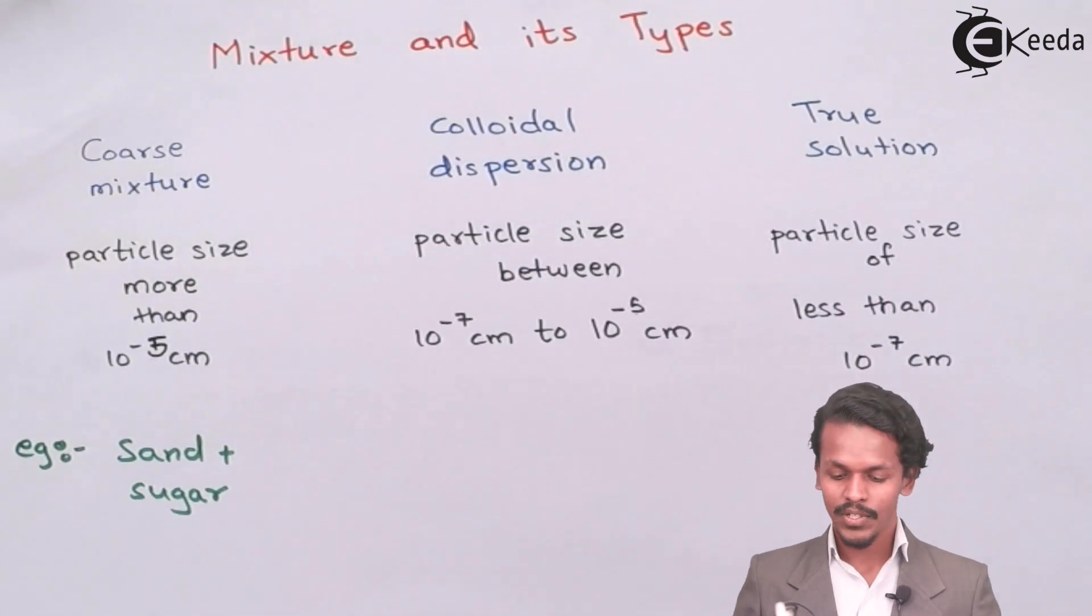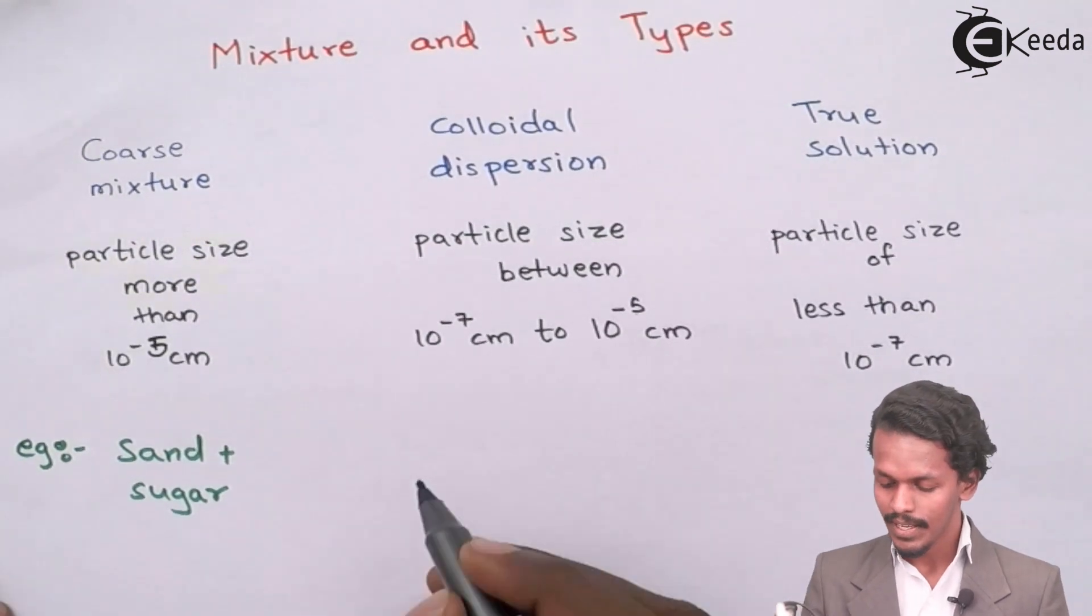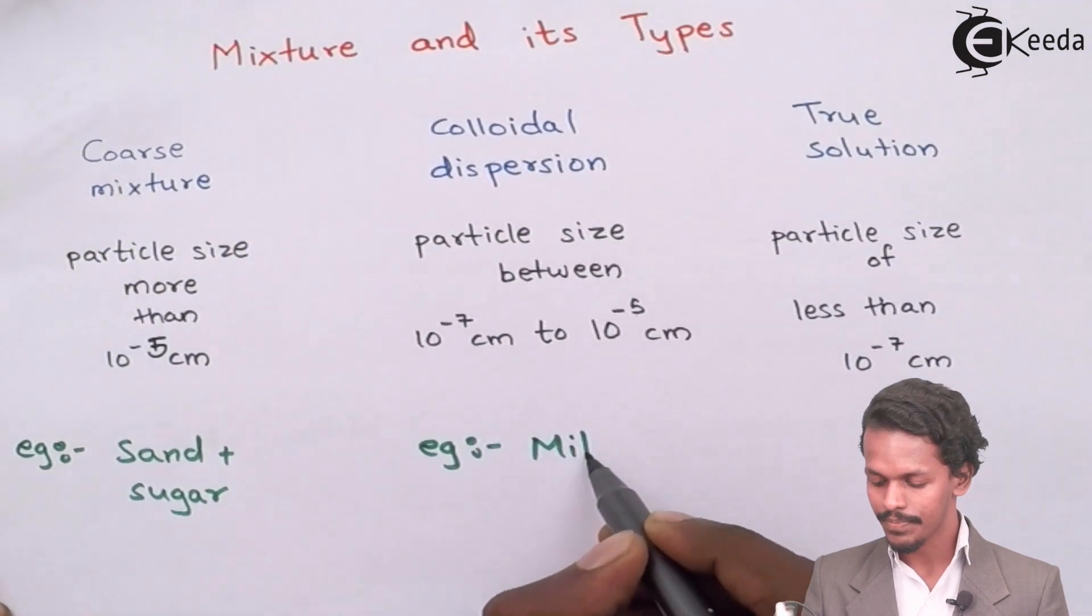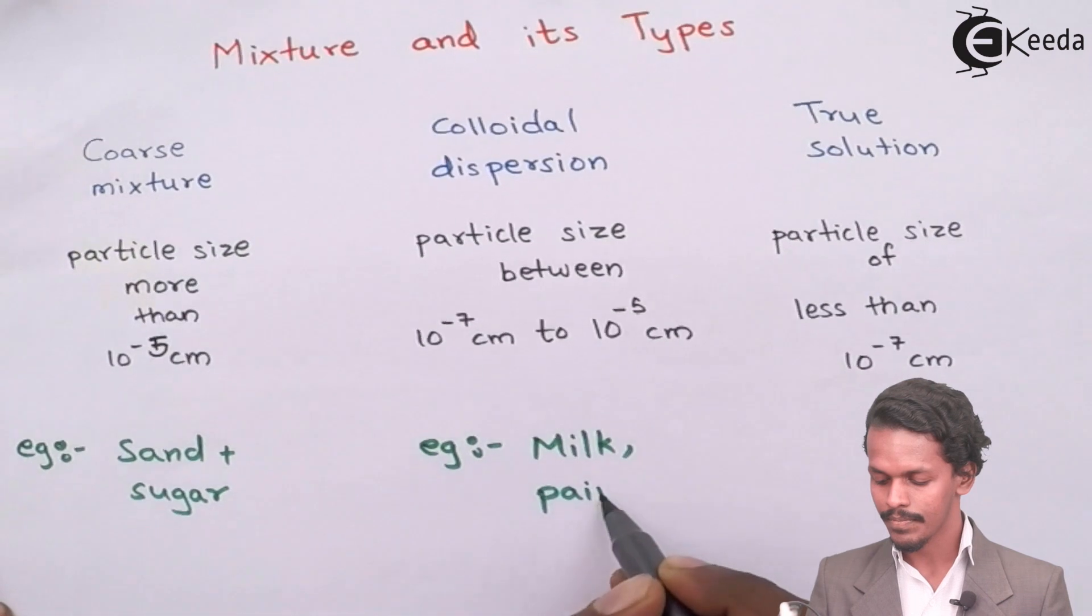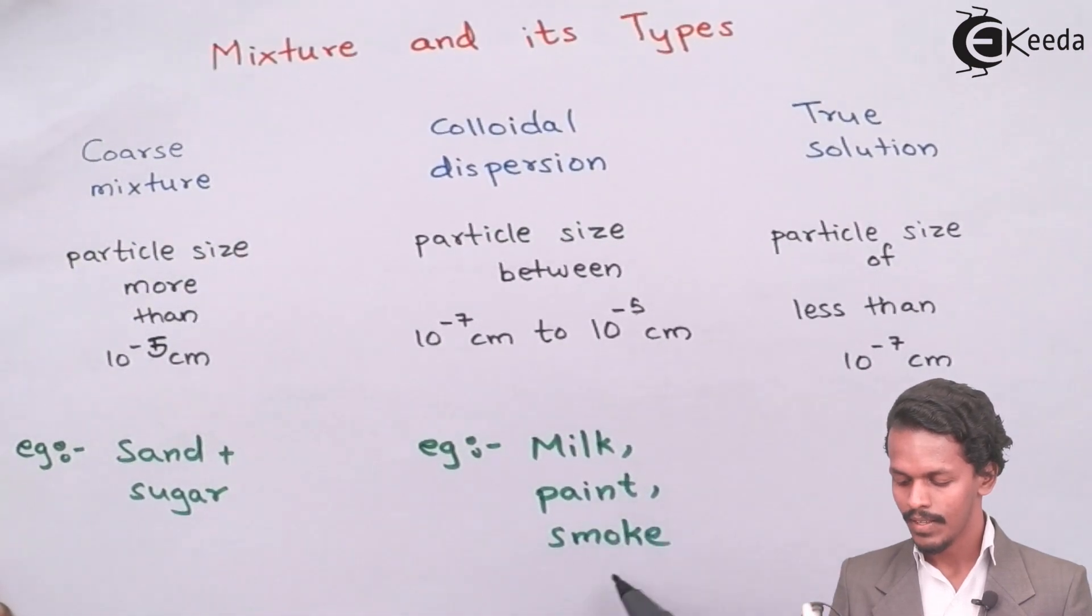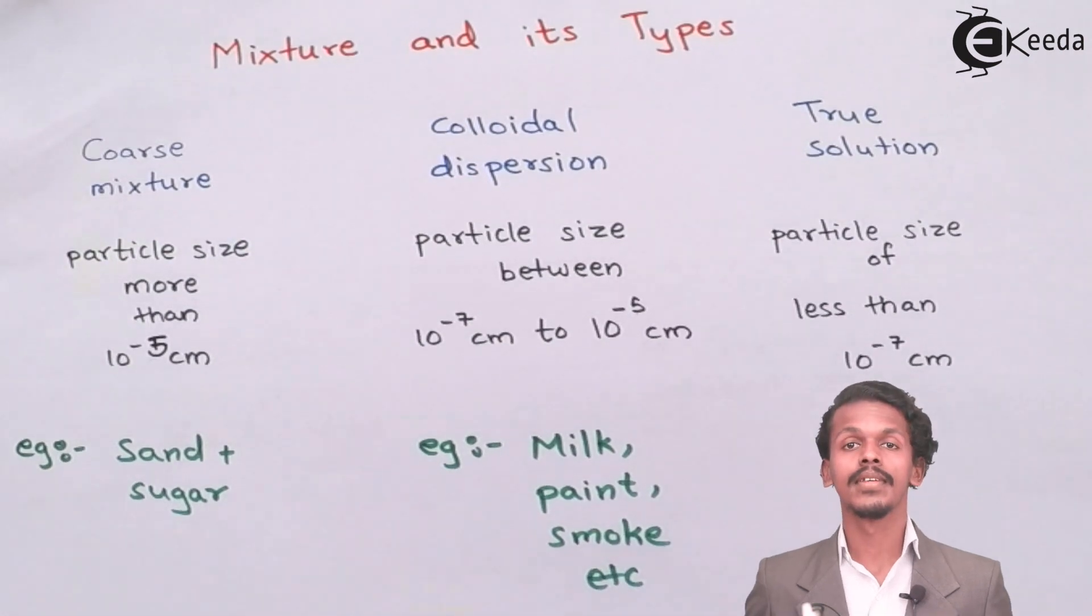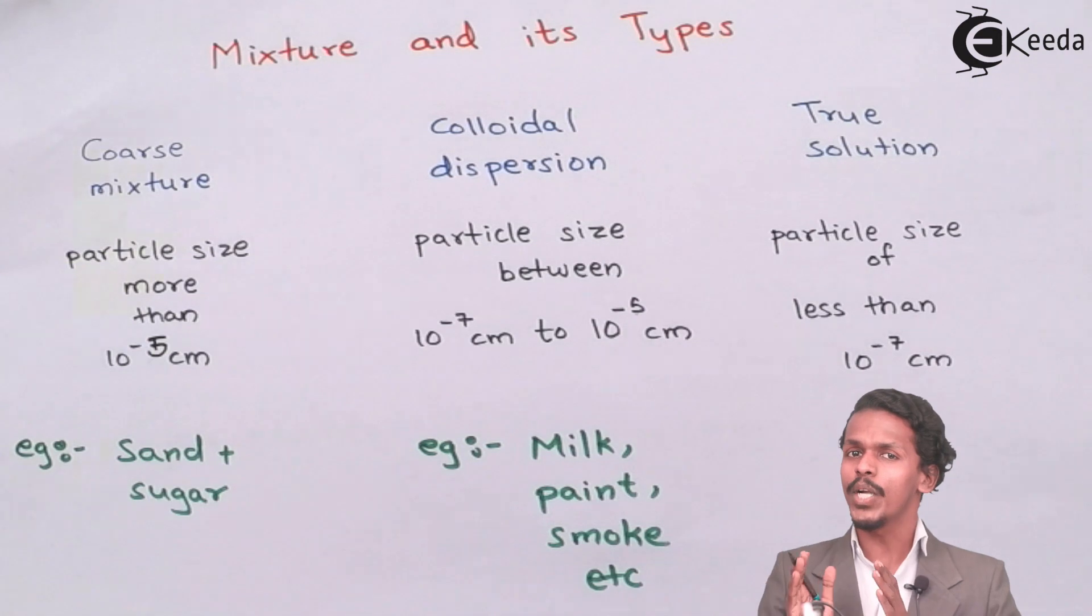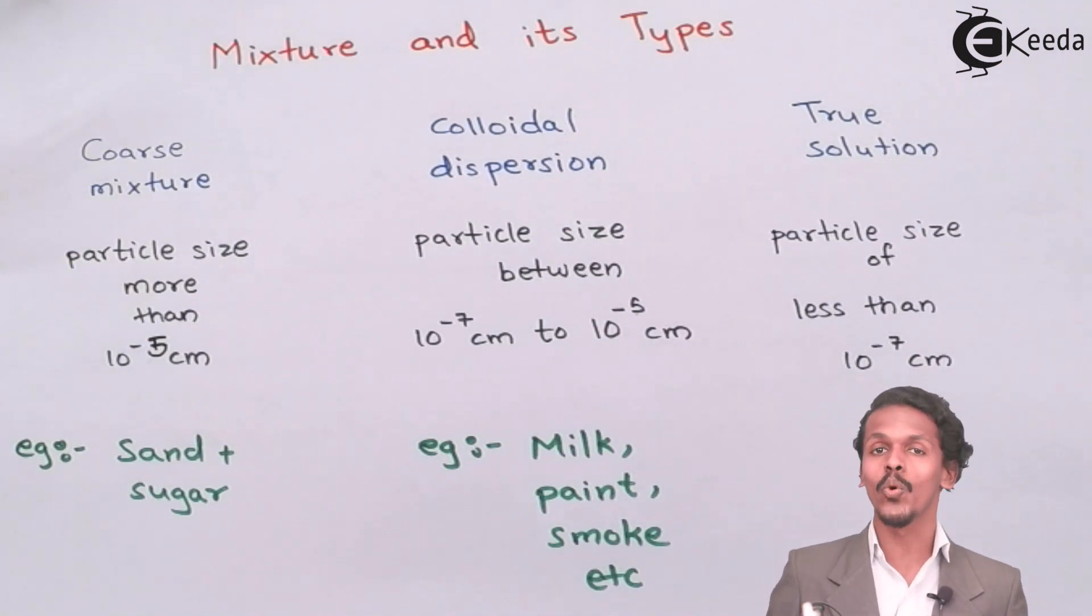The next one is Colloidal Dispersion. I take an example of Milk, Paint, Smoke, etc. These are the examples of Colloidal Dispersion in which they have the size between True Solution and Coarse Mixture.